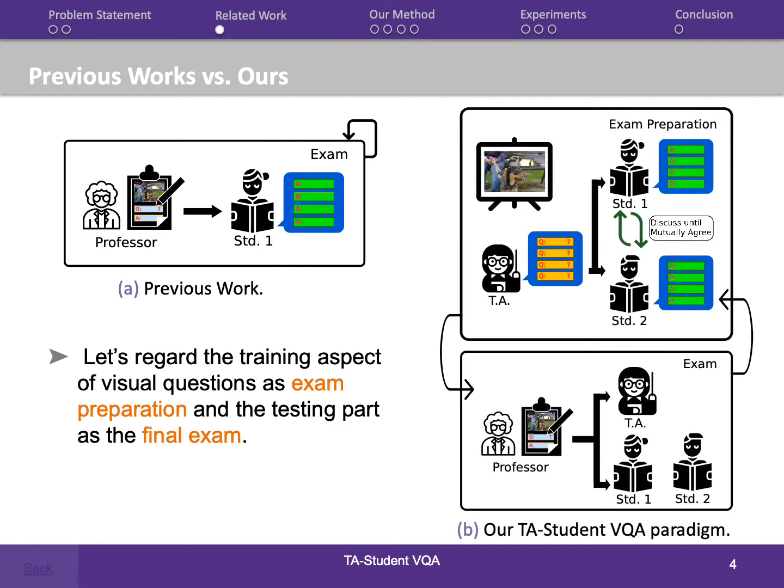In our work, we involve an agent that plays a similar role as a teaching assistant (TA), generating questions based on the given image. In addition, we introduce the idea of using two question-answering agents to realize collaborative learning, similar to two students preparing for their exams without a solution manual — they can only make progress by discussing the topic with each other.